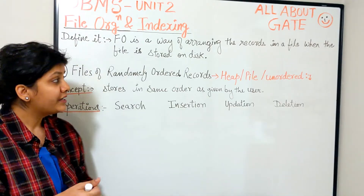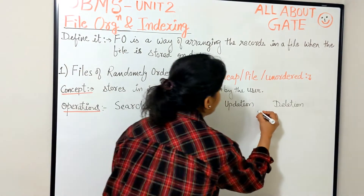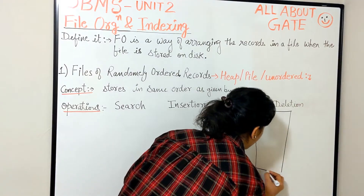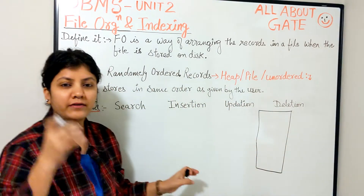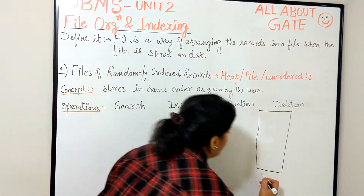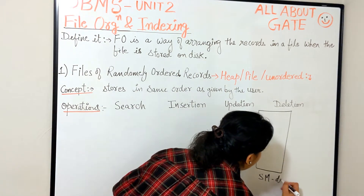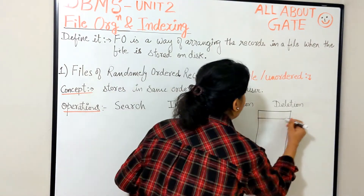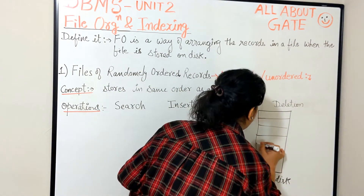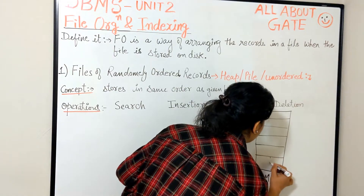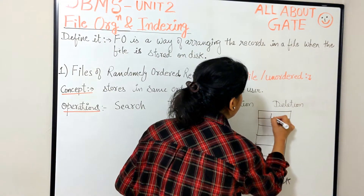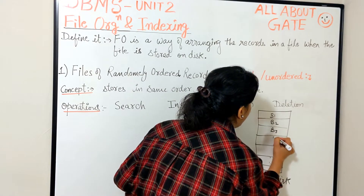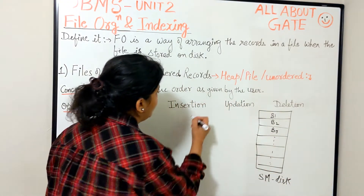So here we are talking about the disk. Let me quickly show how we are going to look at a disk. Your secondary memory, which we are considering here as a disk, is nothing but a collection of blocks — it is actually divided into equal-size blocks. So I would say this is block one, block two, block three, and so on.